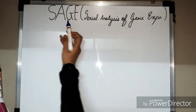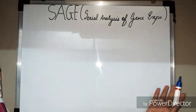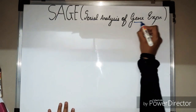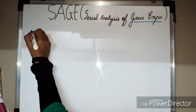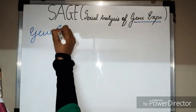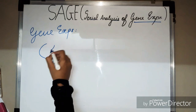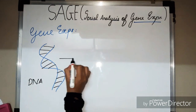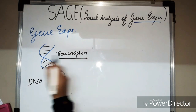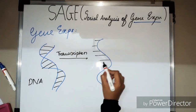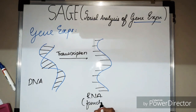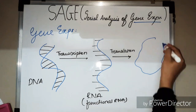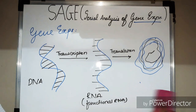Welcome to Life Science Notes. Today we'll look at SAGE, which stands for Serial Analysis of Gene Expression. Gene expression is a process by which information from one gene is used to synthesize a functional gene product — commonly a protein, or in the case of non-coding RNA such as tRNA, the functional product is a functional RNA.